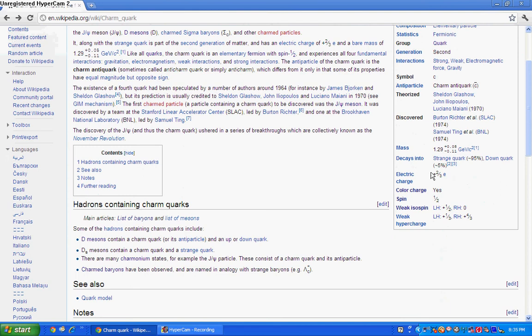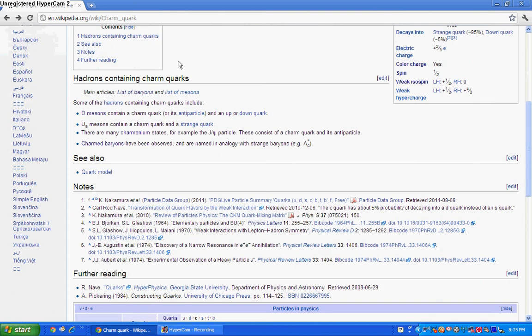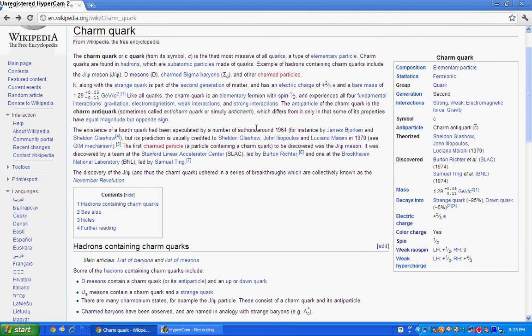Speaking of that, the charm has a charge of plus two-thirds, making it like the up and the top quark. It has a mass of 1.29 GeV (giga-electron volts), which is kind of big, sort of more on the larger to average size—about the mass of a proton or neutron.